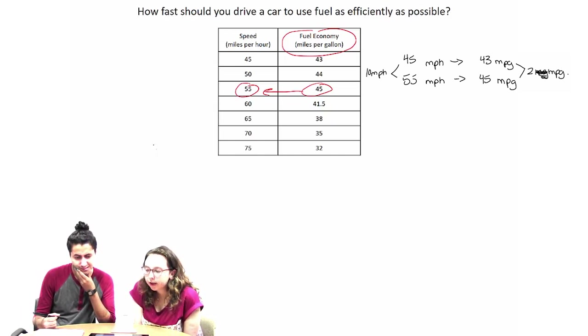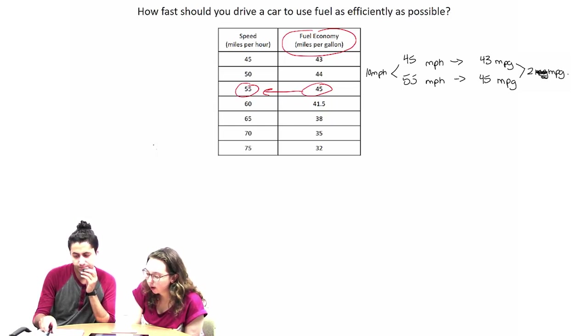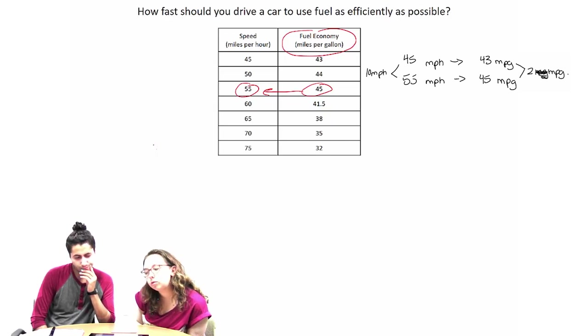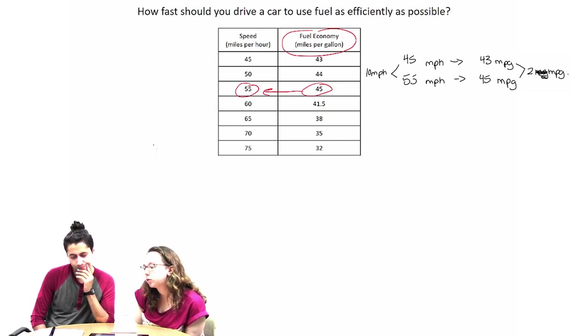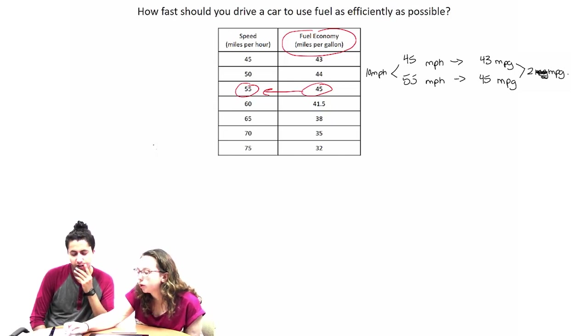I mean, I get what you're saying, and I think my only issue with it is that 45 miles per gallon is still higher than 43, and we want the highest fuel efficiency as possible. And even with these two cases, I get that they're closer, but there's still a drastic difference between these two in comparison.